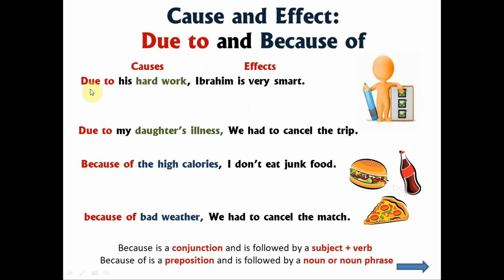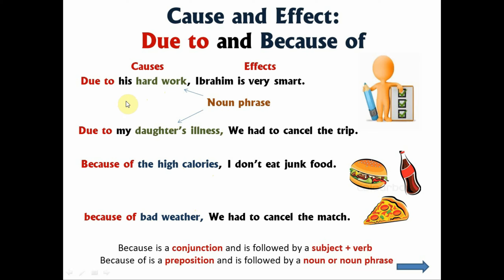But when do we use due to and when do we use because of? When we use due to, it is normally followed by noun phrases. Noun phrases are two words joined together to emphasize the noun — for example: hard work, bad weather, high calories. Due to his hard work, Ibrahim is very smart. That is the cause and the effect.